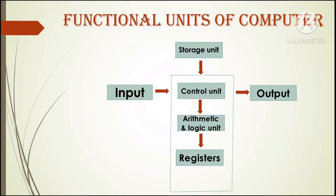Next are the functional units of the computer. This is the functioning model of a computer proposed by John von Neumann, who is a mathematician and computer scientist. The model includes the input unit, which transfers data to the CPU, and the CPU has parts including the control unit, arithmetic and logic unit, and registers or storage unit, and then the output unit.